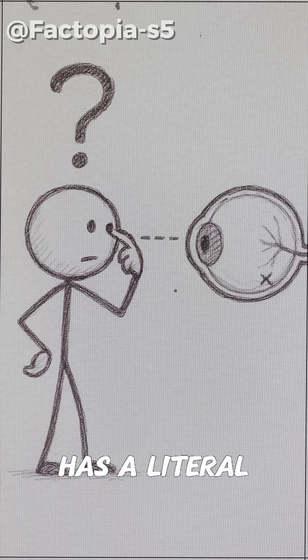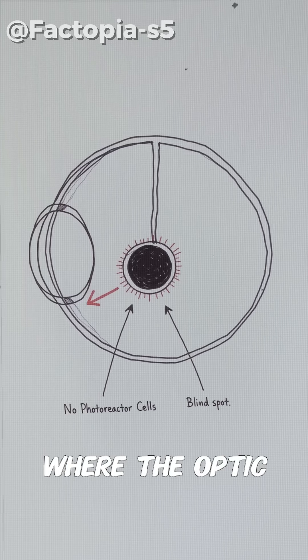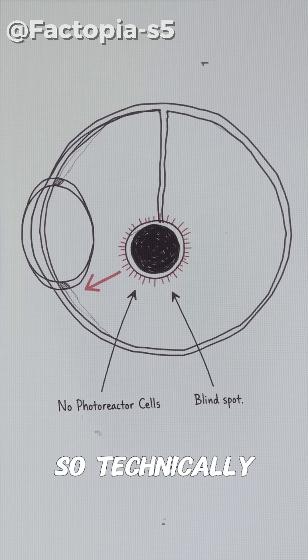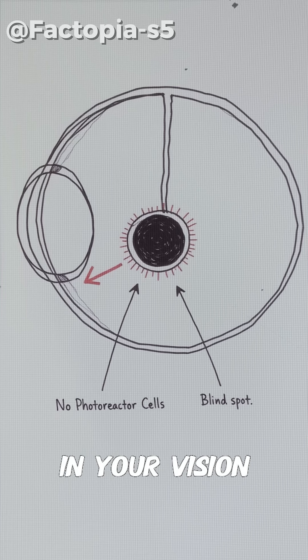Every human eye has a literal blind spot where the optic nerve connects to the retina. There are no light sensitive cells there, so technically you should see a black hole in your vision.